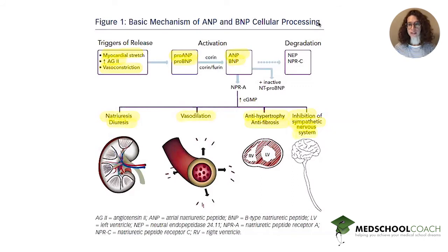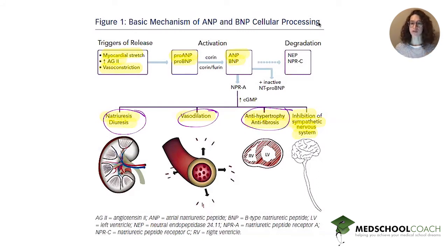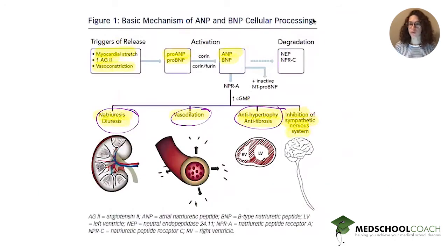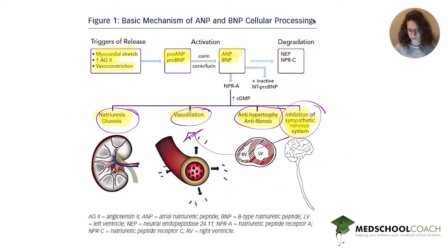It makes sense why we would want all of these things to happen if our ventricles are dilated. Ventricular dilation indicates fluid overload — you have more fluid than your heart can manage. Natriuresis and diuresis get rid of some of that fluid. Vasodilation expands the blood vessels to accommodate the additional fluid. Antihypertrophy and antifibrosis prevent adverse remodeling, since ventricular dilation leads to eccentric hypertrophy, which is how you get heart failure with reduced ejection fraction. Inhibition of the sympathetic nervous system is also important, since the sympathetic nervous system promotes adverse remodeling — which is why we treat so many cardiac conditions with beta blockers.